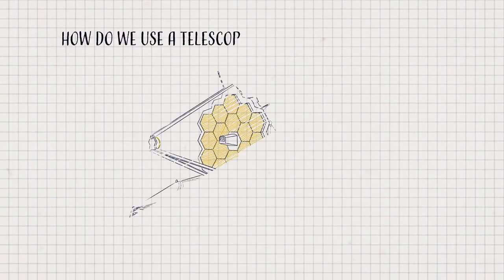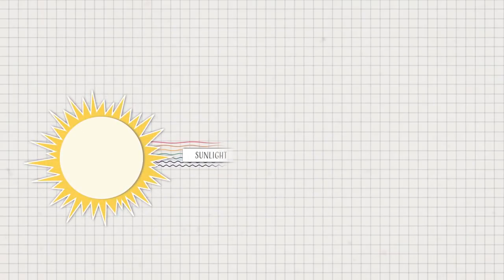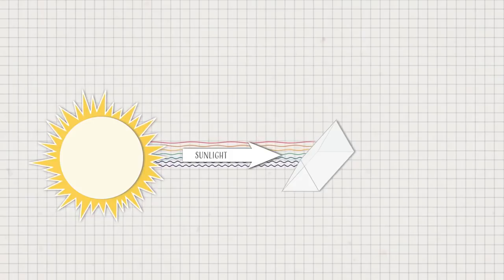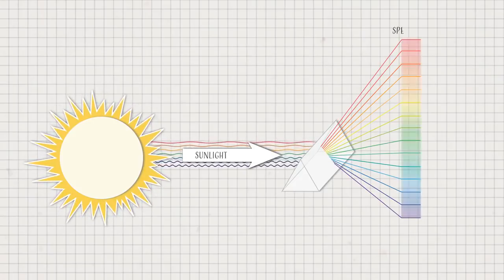So how do we use a telescope to read transit light? Stars emit light at many wavelengths. Like a prism makes a rainbow, we can separate light into its separate wavelengths. This is called a spectrum.